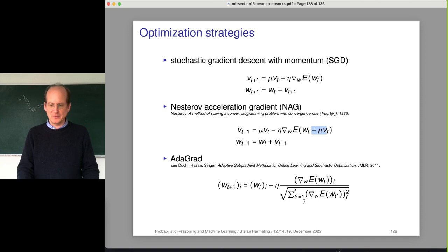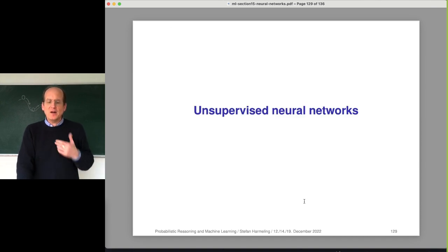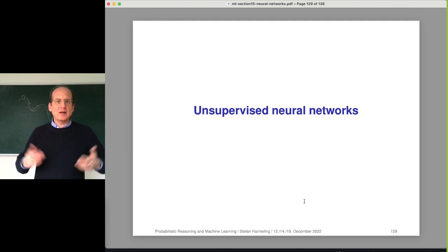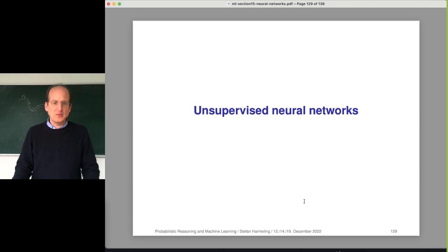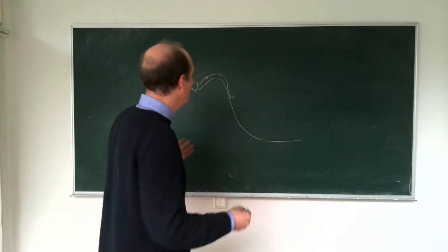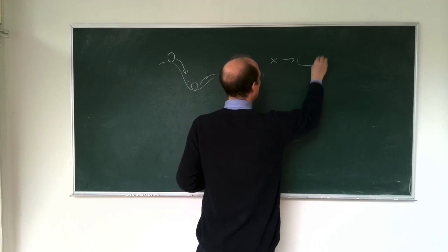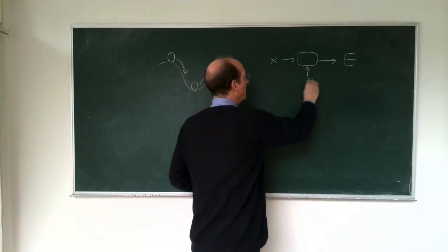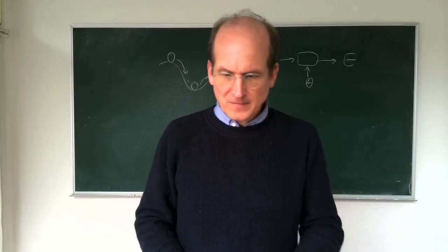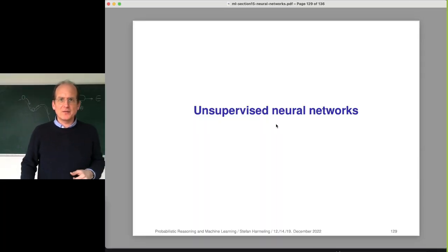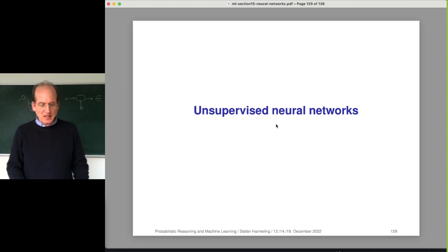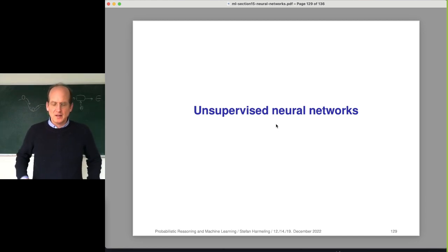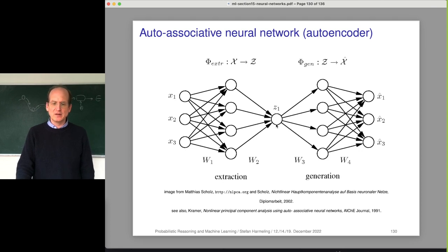So far we looked at the supervised case of neural networks. It's the natural one because we always need a loss function - we have a computational graph, x goes into a neural network, and at the end we need a loss function to minimize and update the parameters. We need a supervisor to provide a guiding signal telling us which direction to move the weights. So how can we do unsupervised learning? I want to give you an example: the auto-associative neural network, also called the autoencoder.